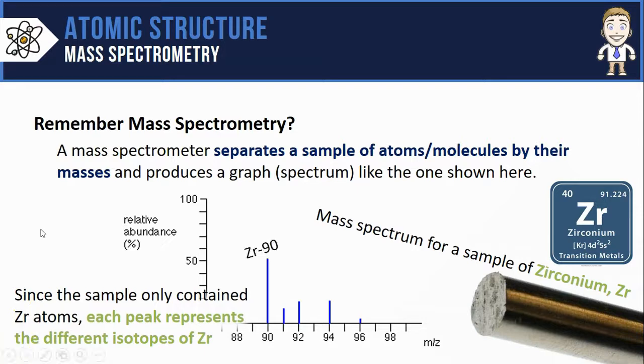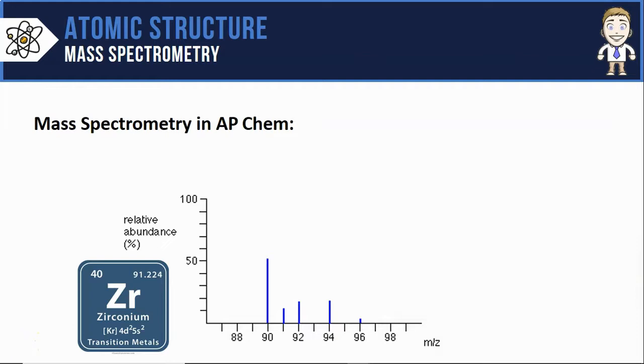So in the sample I've got some zirconium 90, 91, 92, 94, and 96. I can also see based on the peak heights that zirconium 90 was the most abundant, the most common type of isotope, whereas 96 was the least.